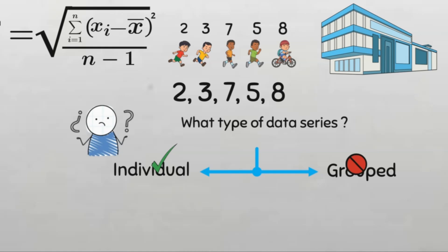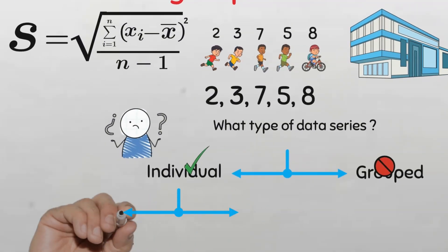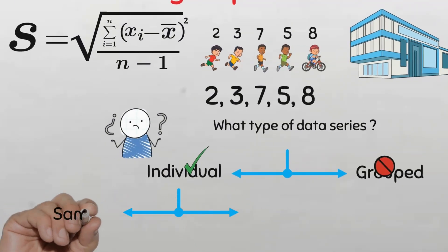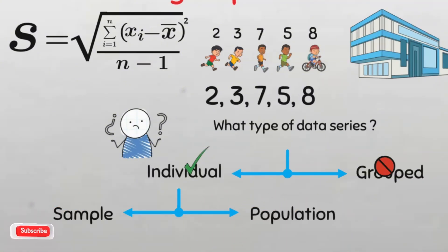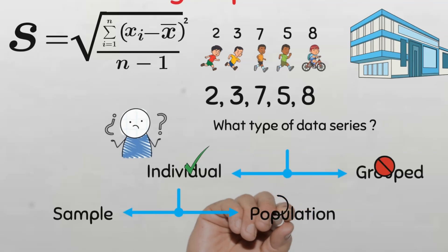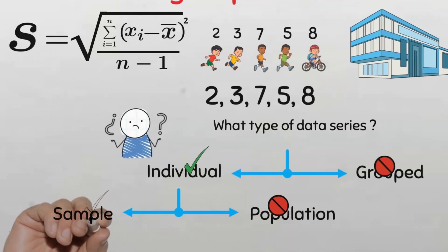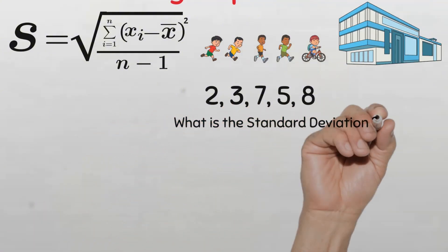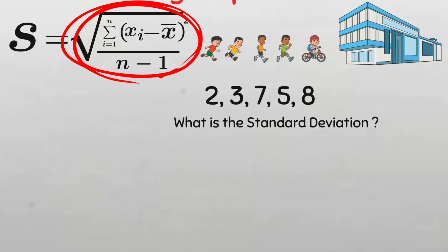Before we know which formula to use, we need to clarify whether this data is that of a sample or a population, because these formulas are slightly different. This will help us to be sure of the correct formula to apply. We understand that this data is for a sample, as it was mentioned in the question that it is a sample of children in Samaru, Zarya. So this is not a population, but a sample, and we will be using the formula for calculating the standard deviation for ungrouped data of a sample.